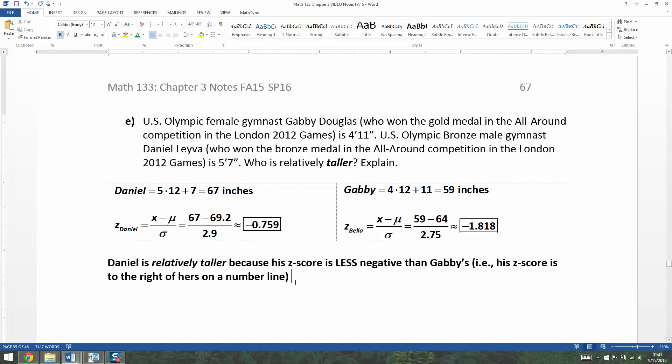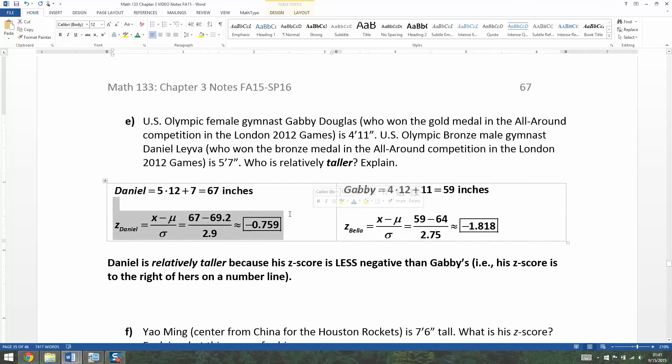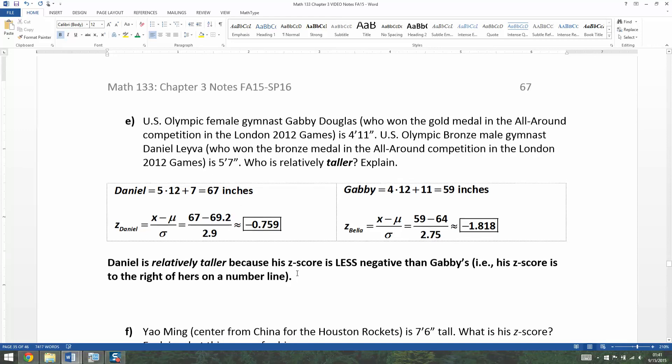So not only is he absolutely taller, but he was relatively taller as well. If they stood next to each other, he would be taller than her because he's 67 inches tall and she's only 59. But in this case, it also worked out that he was relatively taller than her, because his Z-score was not as negative as hers. She's much shorter in comparison to women than he is in comparison to men.